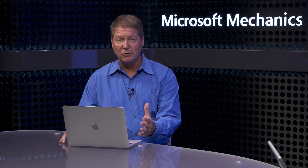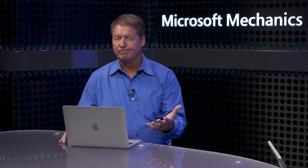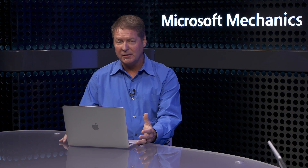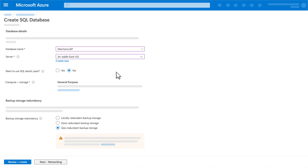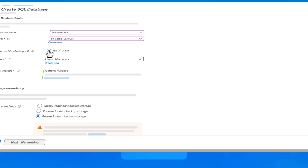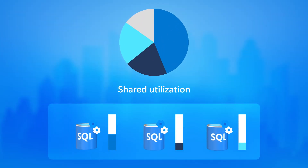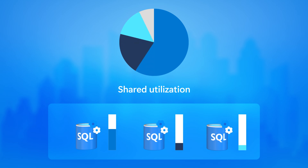Another problem we've solved is over-provisioning when you have solutions that use multiple databases. In the past, you might have to over-provision each database for peak requirements. Now, instead of provisioning for peak utilization per database, with the Elastic Pools option to save cost, you can pool those resources with a shared utilization threshold. So even as utilization per database varies, as long as the databases collectively stay within the threshold, your costs are predictable.